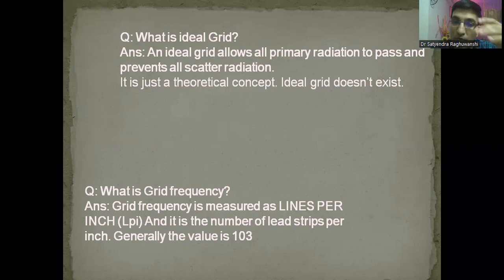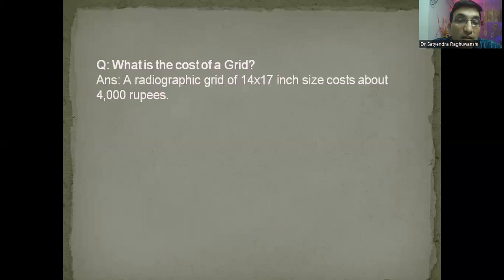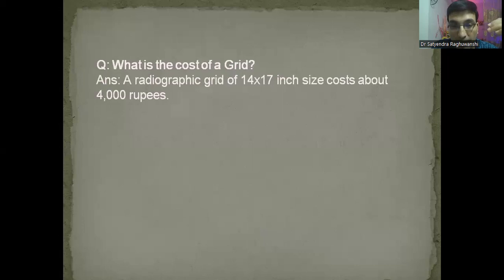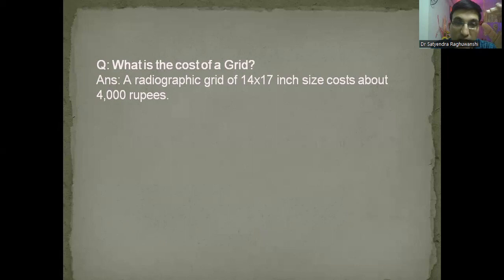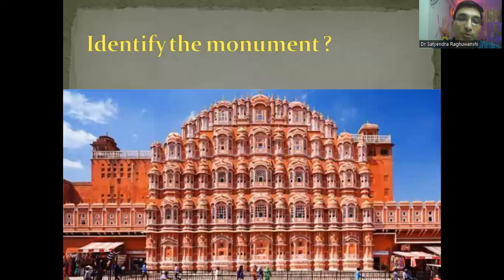What is grid frequency? It is simply lines per inch, and the value remains around 103. For every table viva item, the examiner might ask the price. The price of the grid is approximately 4000 rupees for a 17×14 inch size grid. Always use the word 'approximately.' That gives the examiner the idea that you know almost everything about the grid.